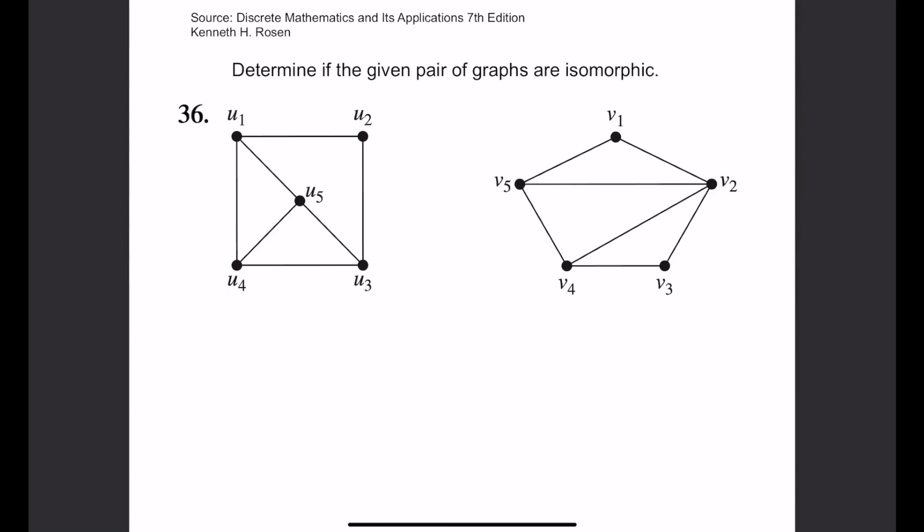I'm going to be solving this problem: Determine if the given pair of graphs are isomorphic. The first thing I'm going to do is label both graphs. We have G1 and G2.